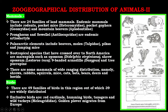Mammals are represented by 24 families of land mammals. Endemic mammals include rodents such as pocket mice, pocket gophers, and mountain beavers, then pronghorns and Bovidae as endemic artiodactyls. Palearctic elements include beavers, moles, pikas, and jumping mice. Neotropical species that have crossed into North America include marsupials such as the opossum Didelphis virginiana, shrews, the opossum Lestoros inca, nine-banded armadillos, and tree porcupines. Widely distributed mammals include shrews, rabbits, squirrels, mice, cats, bats, bears, and bobcats.